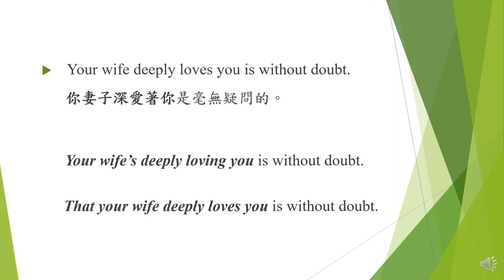再請看這個句子：Your wife deeply loves you is without doubt，你妻子深愛著你這件事是毫無疑問的。這個句子和上面那個句子的錯誤是一樣的，同樣造成一個子句裡出現兩個主要動詞，第一個是 loves，第二個是 is。第一種改法是把前面的子句變成動名詞片語：Your wife's deeply loving you is without doubt，這樣就只剩下一個主要動詞。